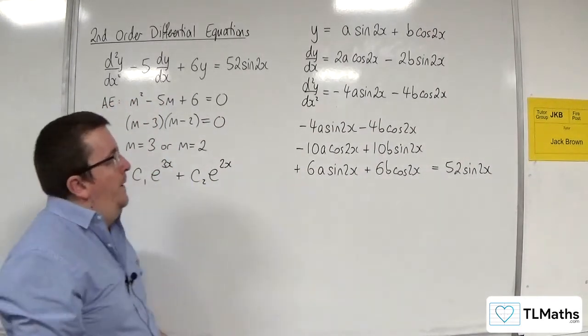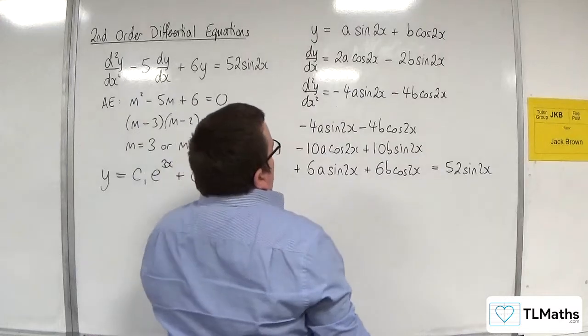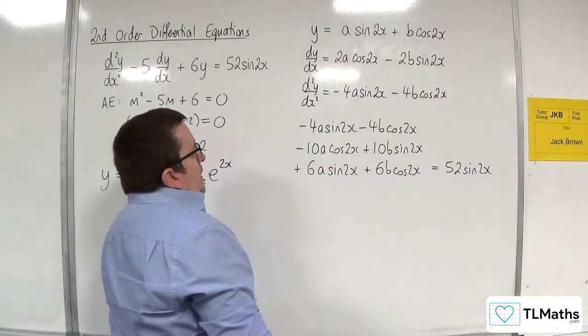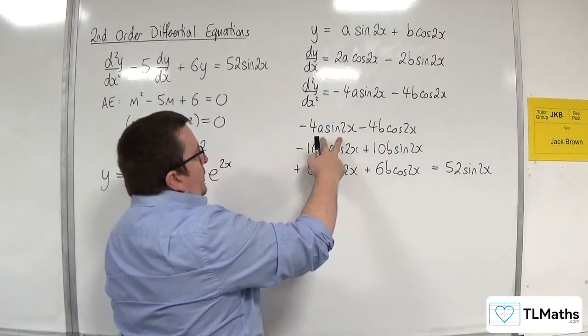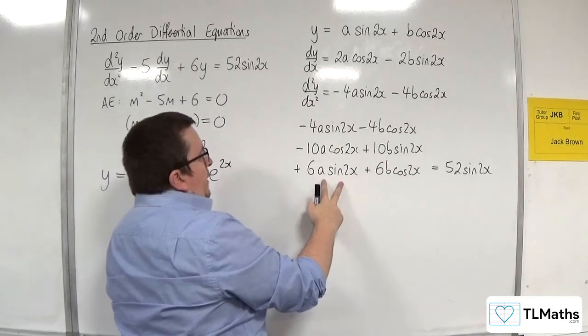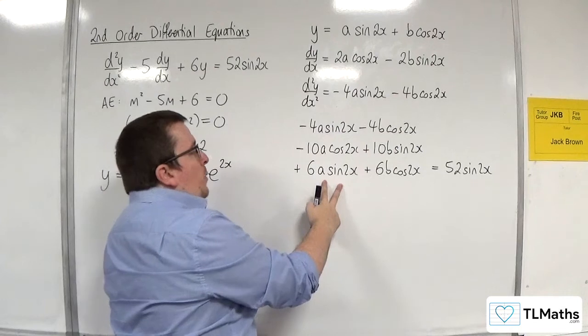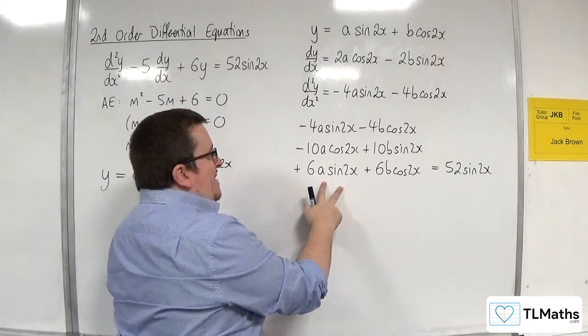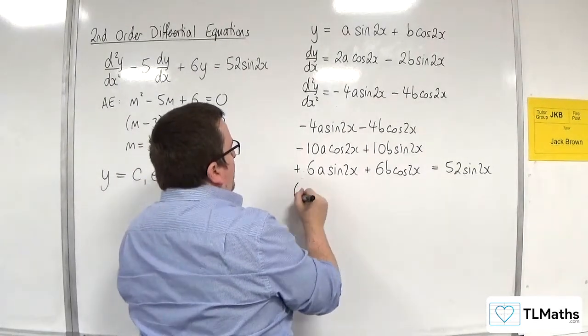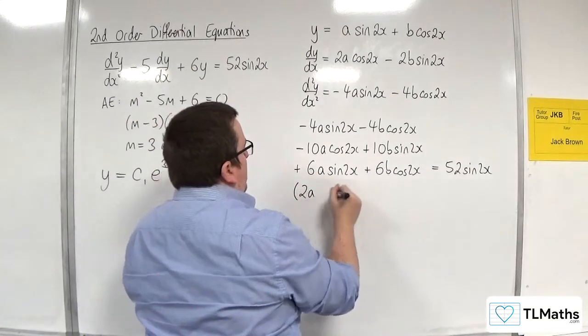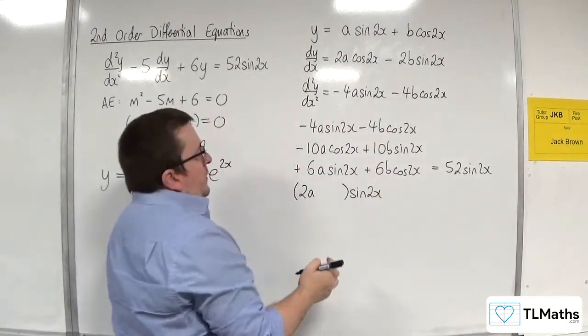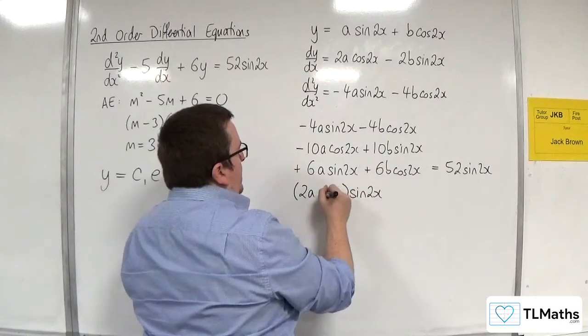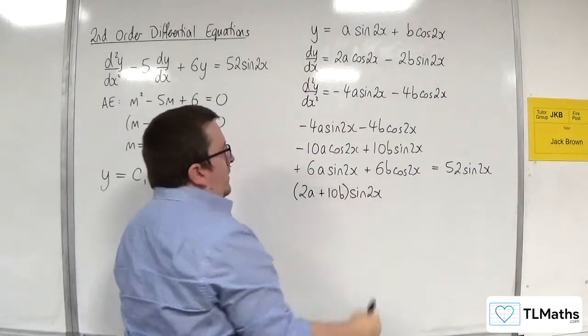Right. Okay. So, let's simplify this down. So, on the left-hand side, I've got the minus 4a sine of 2x and the 6a sine of 2x. So, that leaves me with 2a sine of 2x. Okay. So, I'm going to factorise it as well. So, I've got 2a of the sine of 2x's. And the other sine of 2x term is this one, which is 10b. So, plus 10b sine of 2x.